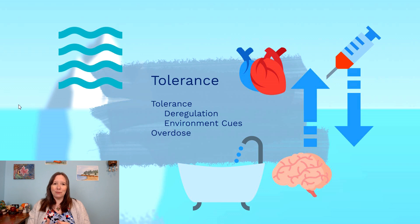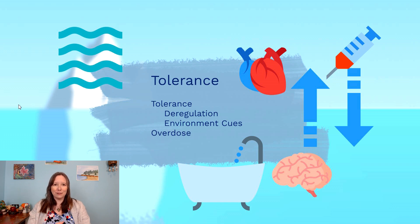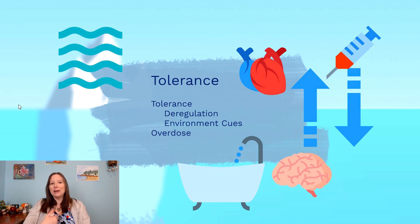Heroin is considered a downer — it slows down heart rate, breathing rate, and brain activity. When a person first takes heroin, it activates the parasympathetic nervous system and calms them down. If a person were then placed on pills like oxycodone or dilaudid after surgery and had to take them at home, every time they take these pills it slows down their heart.